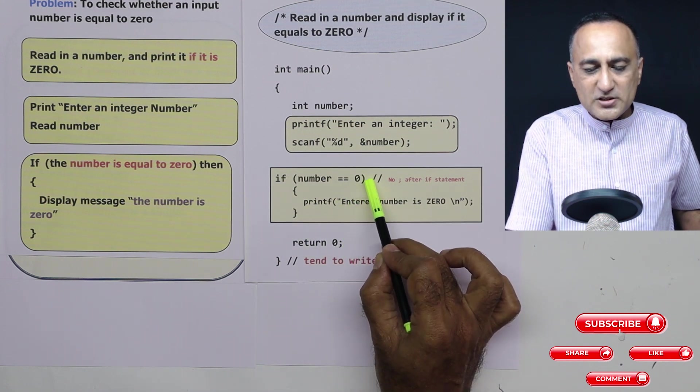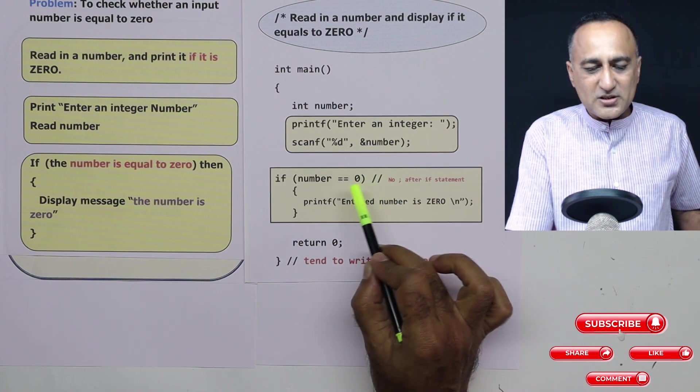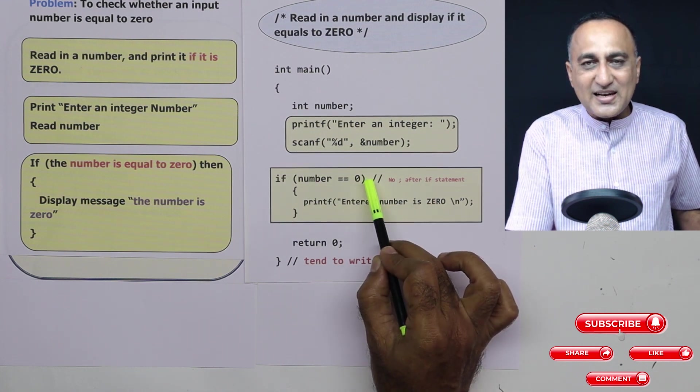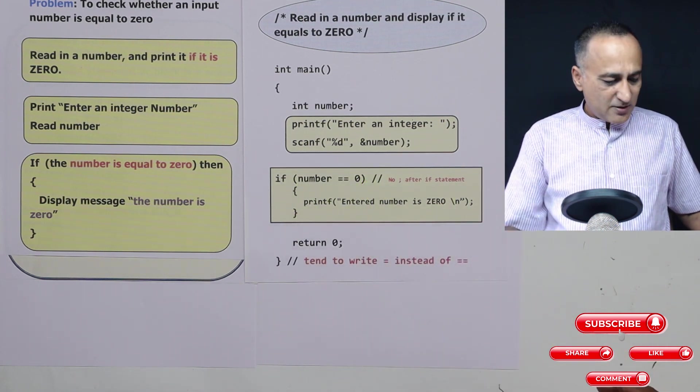Another common mistake, do not put a semicolon after this parenthesis. That is incorrect because the semicolon is a null or empty statement. So the if will get associated with this empty statement.